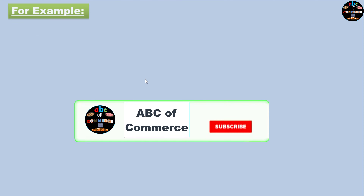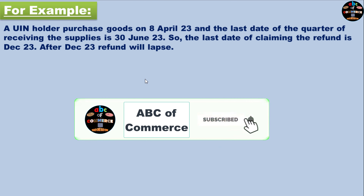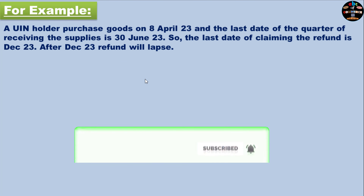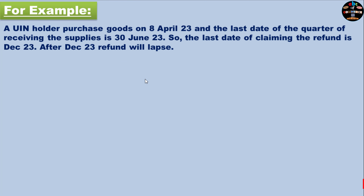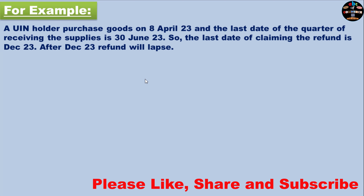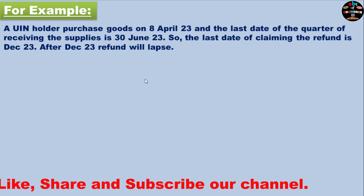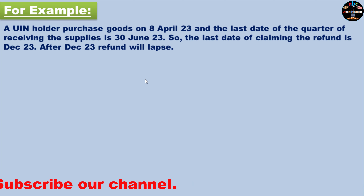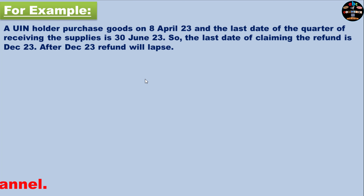For example, if a UIN holder has made a purchase in April, then the relevant quarter is April to June. The last date of this quarter is 30th June. So from 30th June, you will have an additional 6 months to claim your refund. That means up to 31st December — after December, you cannot make a refund claim.